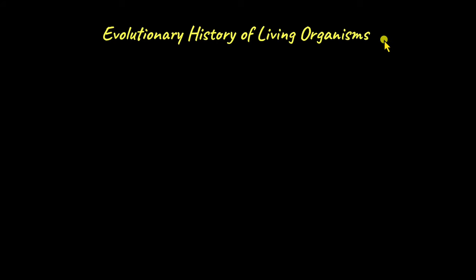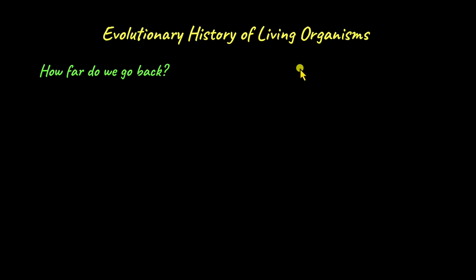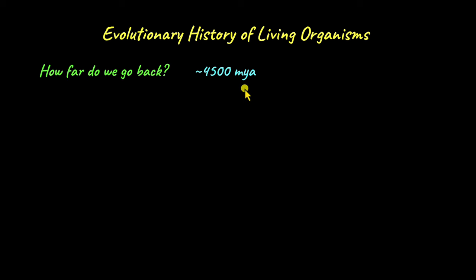When we want to learn about the evolutionary history of living organisms on Earth, the first question we need to ask is how far do we go back in the timeline of Earth. Do we go back 4,500 million years ago? MYA stands for million years ago. What is significant about 4,500 MYA? This is when scientists think the Earth was formed.